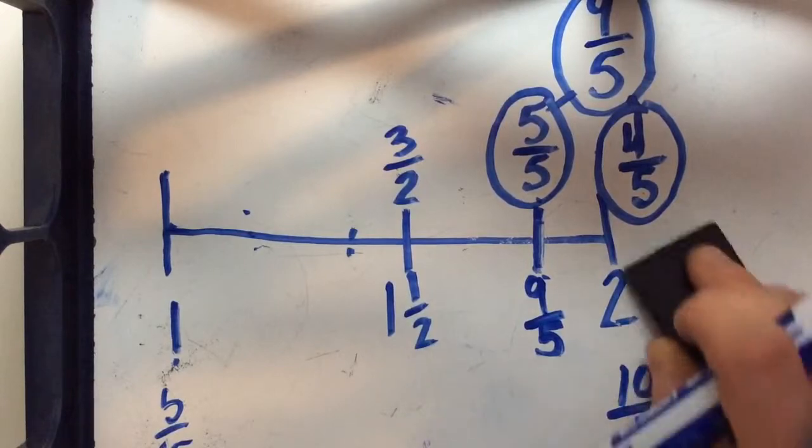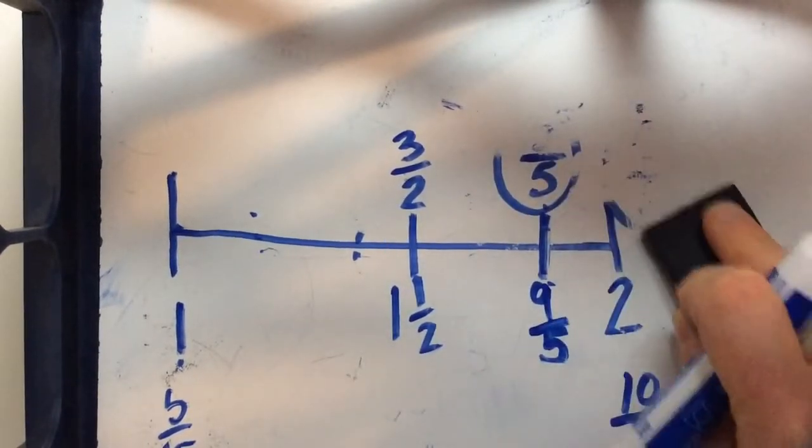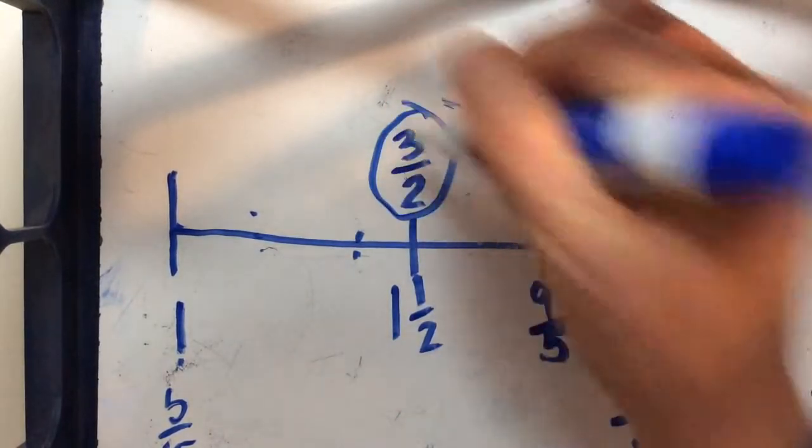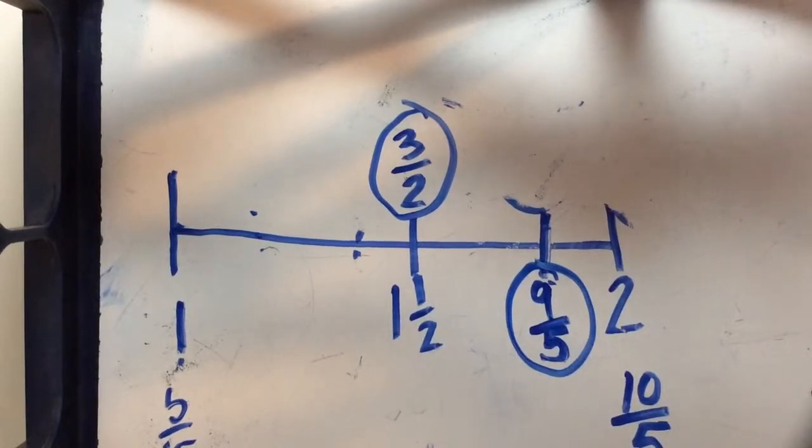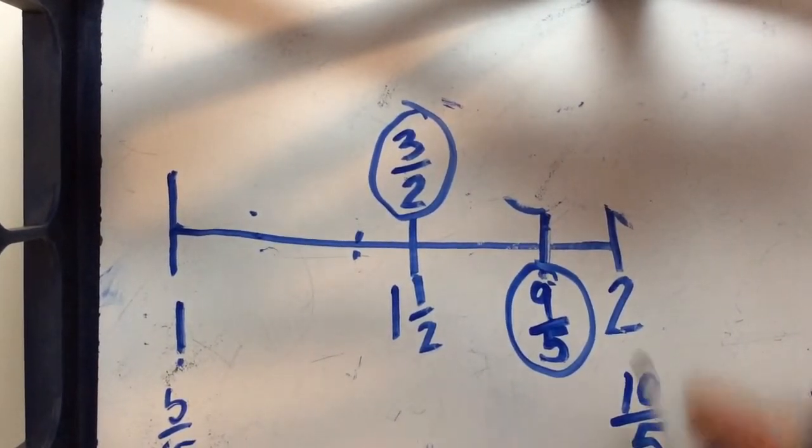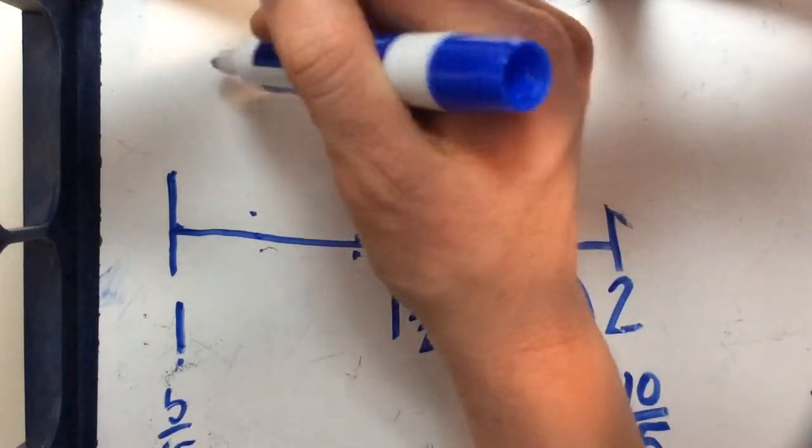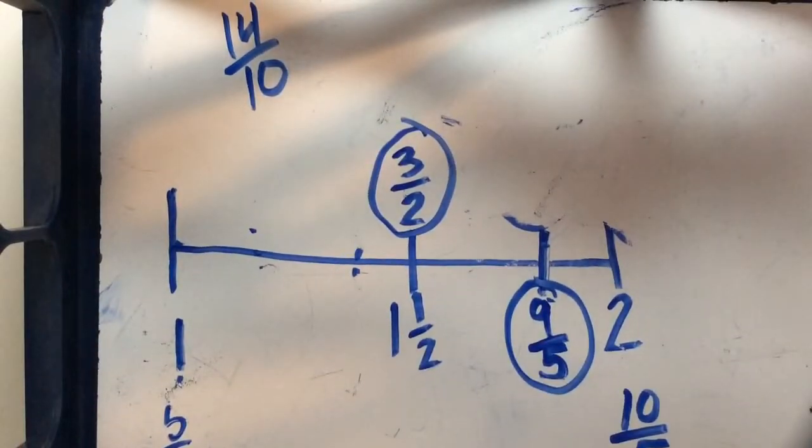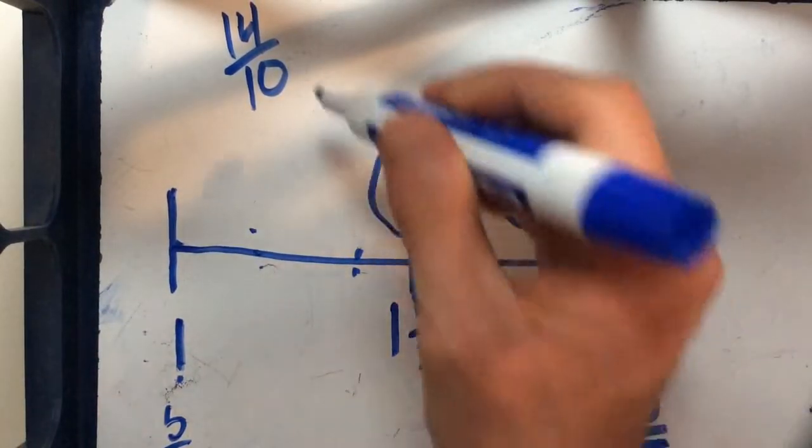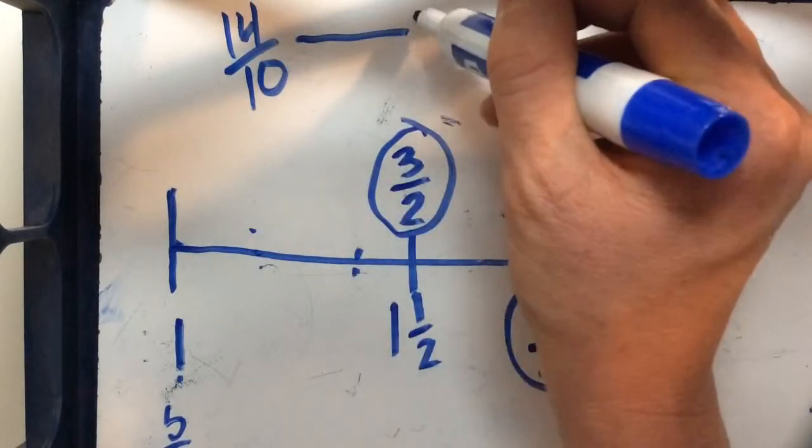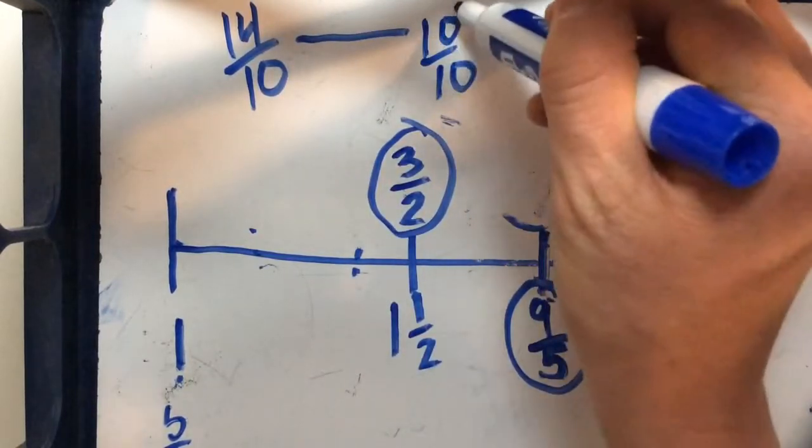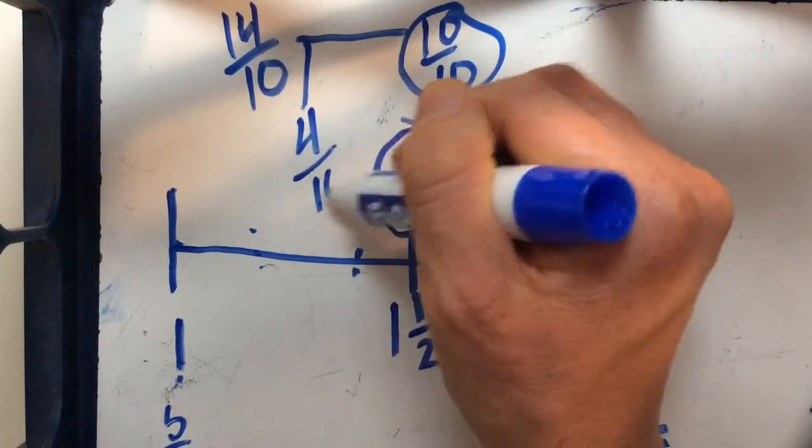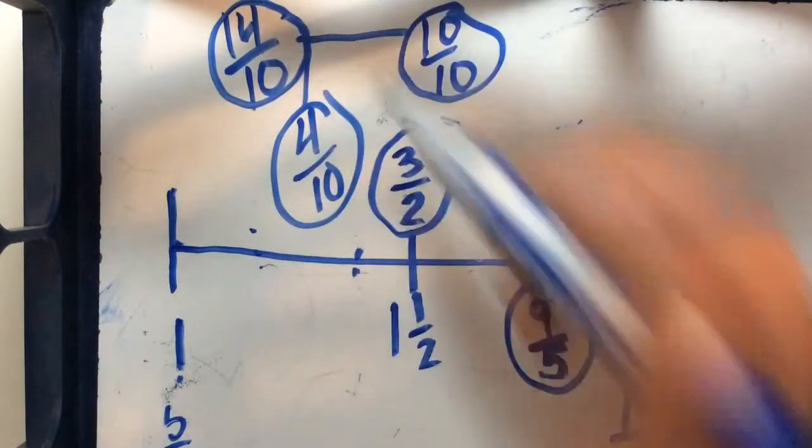So we've got two of our fractions we're going to compare. Let's plot one more. So far we have 3 halves and 9 fifths. The last fraction we are going to plot is 14 tenths. Now if we break up 14 tenths we know that we're going to have to have 10 tenths to make one whole and we're going to have to have 4 more tenths to bring us to 14 tenths.